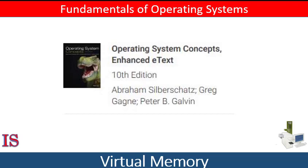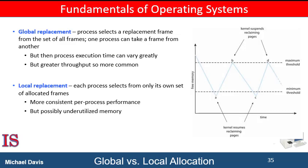In the last lesson, we were discussing page allocation. Let's pick up where we left off. Another important factor in the way frames are allocated to the various processes is page replacement. With multiple processes competing for frames, we can classify page replacement algorithms into two broad categories: global replacement and local replacement.